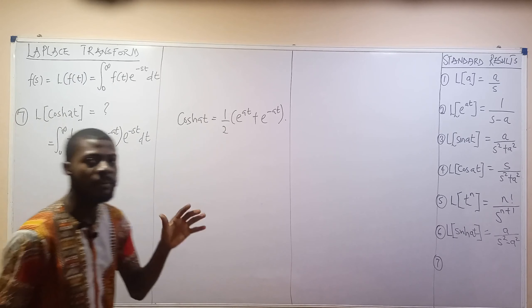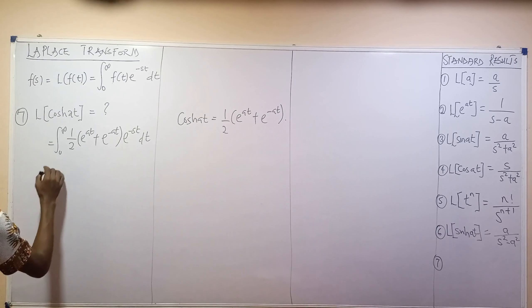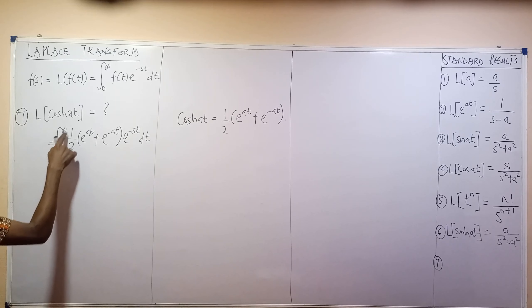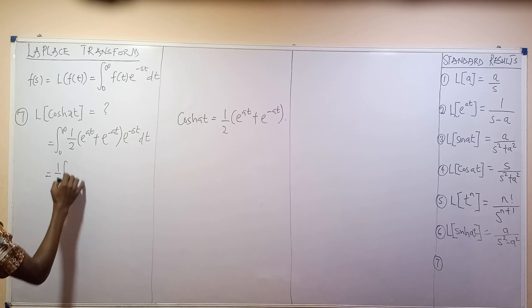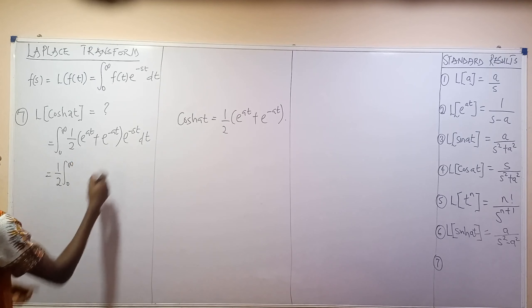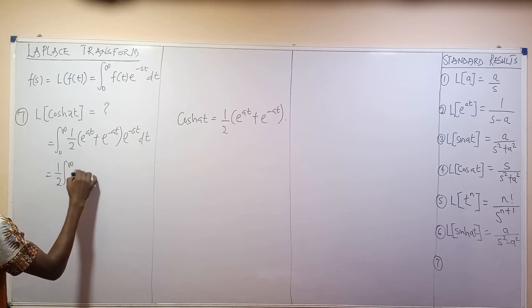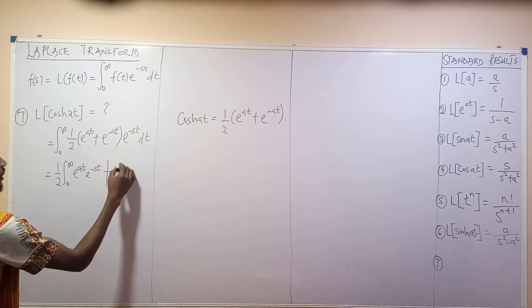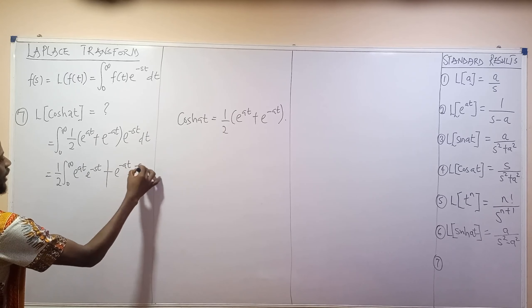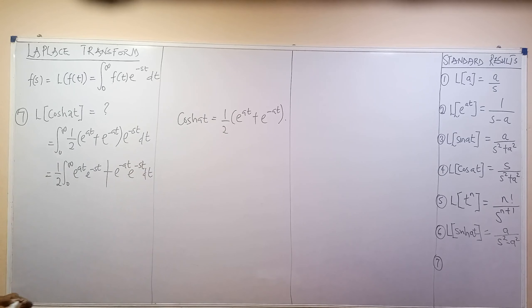Please watch the first video on Laplace transform for reference. The constant 1/2 can come outside the integral. We then have 1/2 times the integral from 0 to infinity. Opening the brackets, this becomes exponential(at) times exponential(−st) plus exponential(−at) times exponential(−st), all times dt.